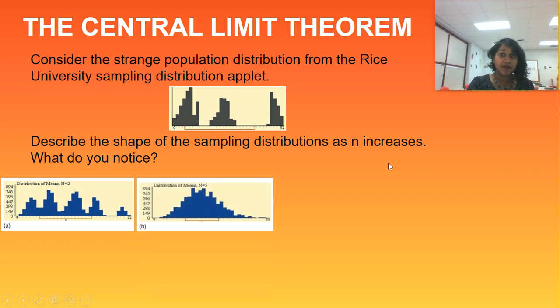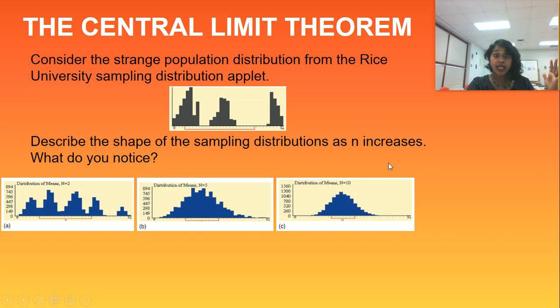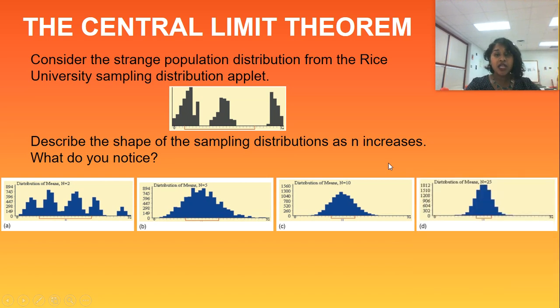Look what happens at n equals 5. Whoa, hold the phones. That's starting to look like a symmetric, beautiful, normal distribution. n equals 10, n equals 25. And not only is it a normal distribution, but the variability is super low on that one.